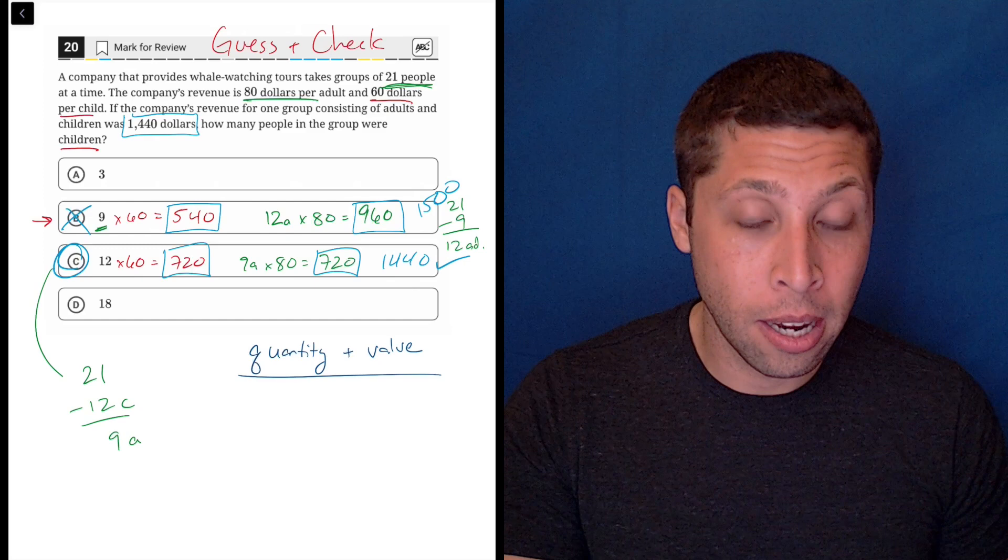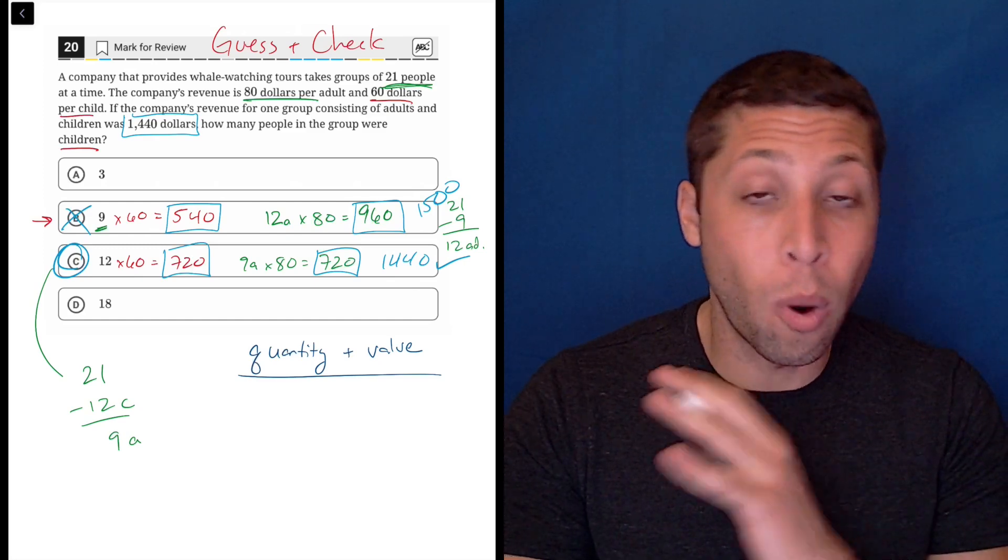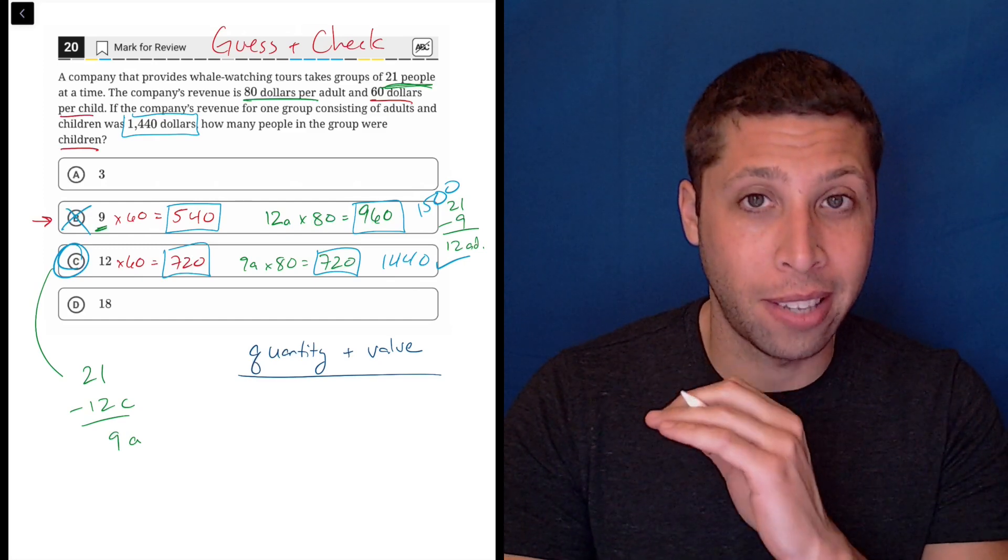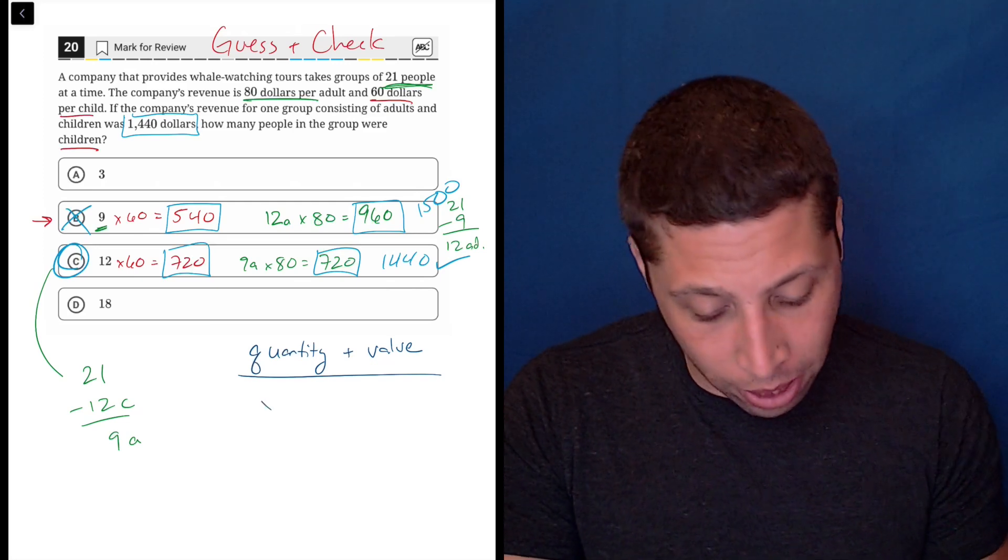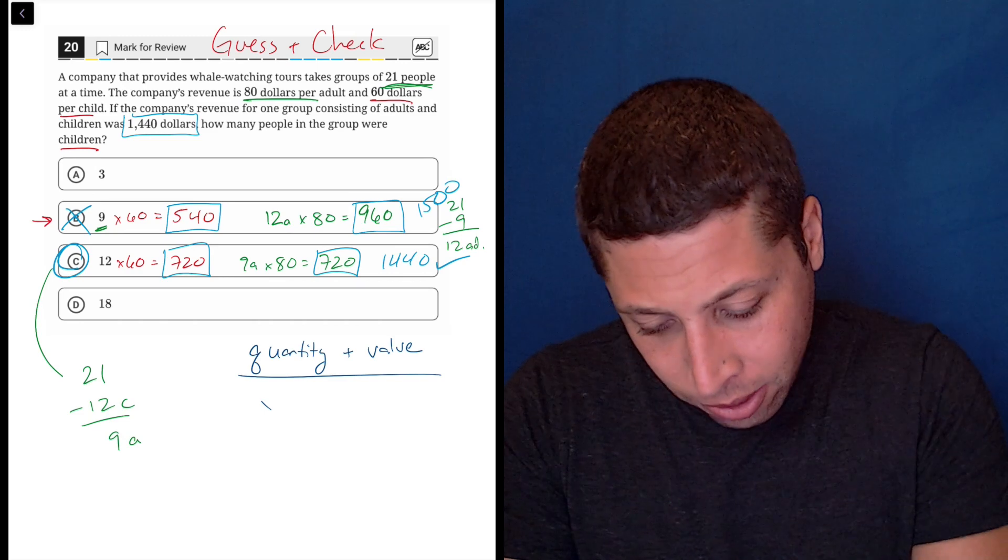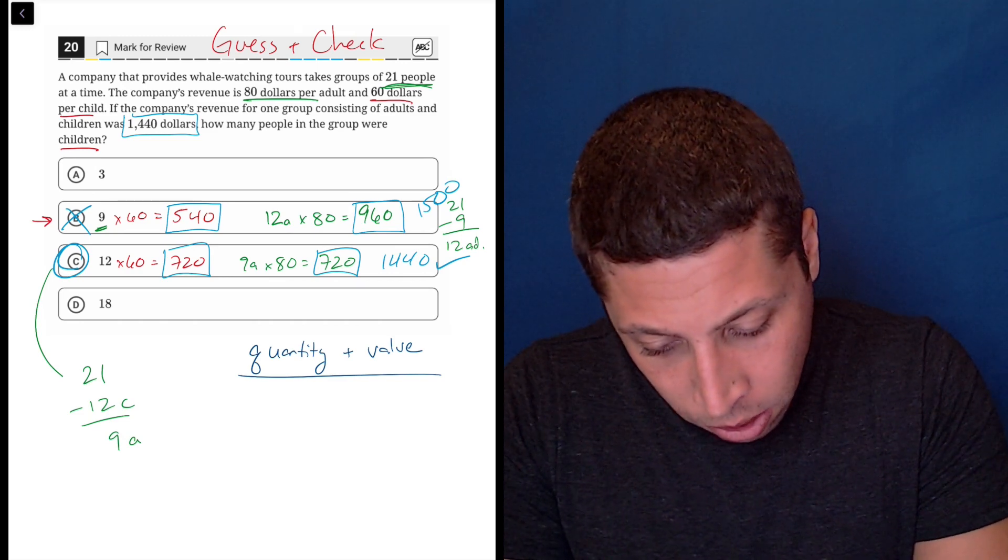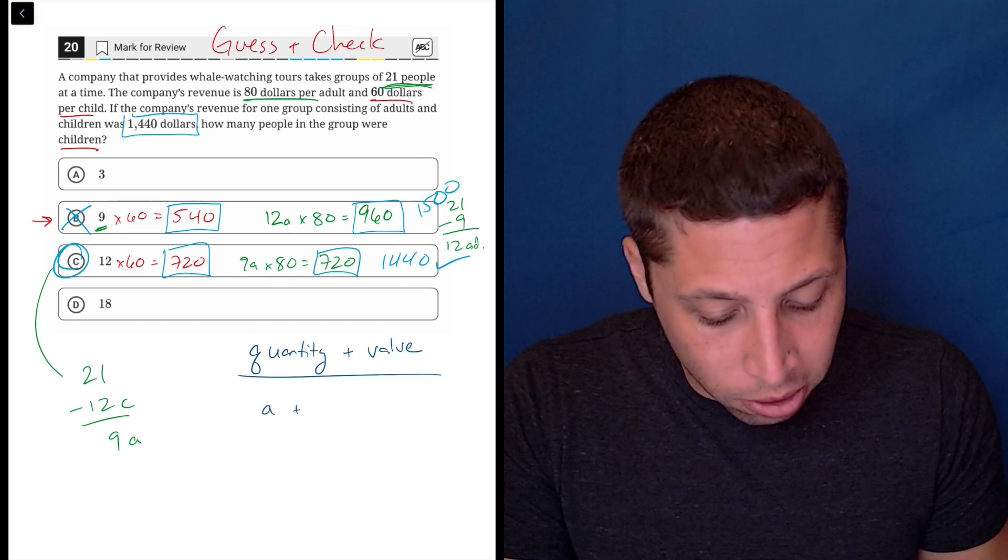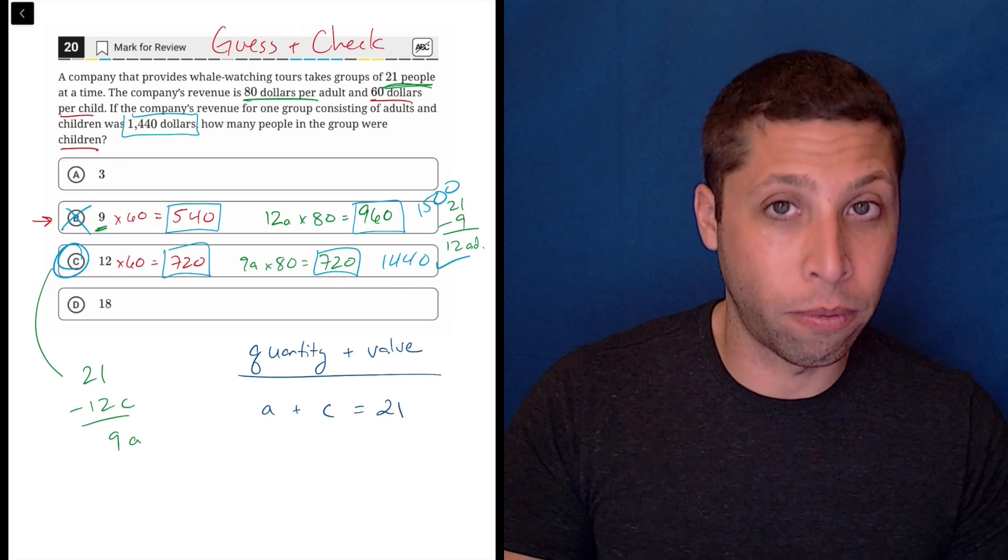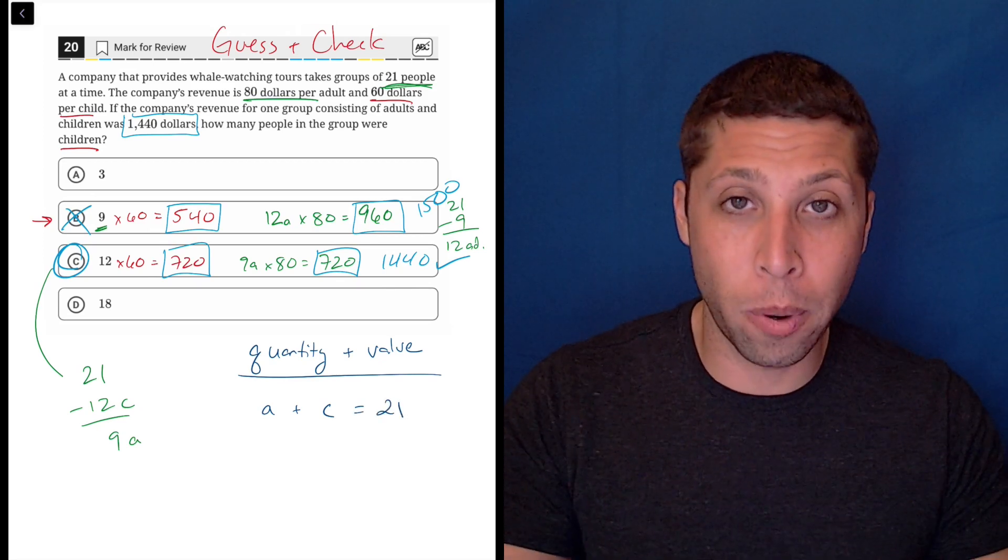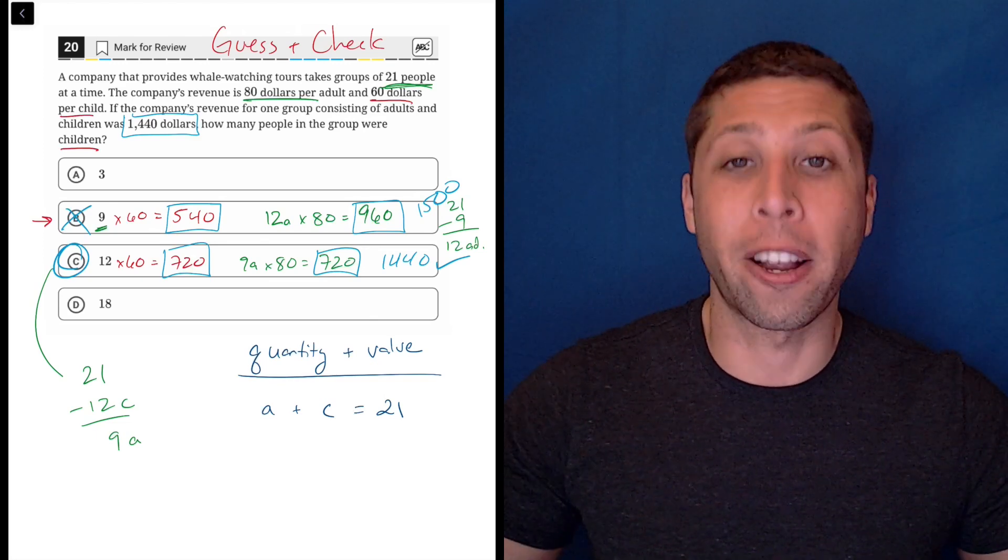There's two equations we need and we need one to represent the quantity. So in this case, the how many people are we talking about? So that's 21 people. So we would say, let's not use X and Y, let's use A and C. So the adults plus the children is 21. So the variables are very straightforward here. The equation is very straightforward. How many of whatever we're talking about do we have?